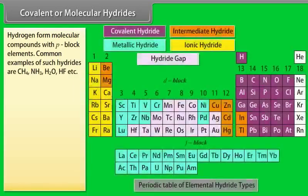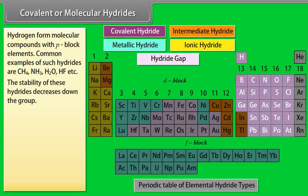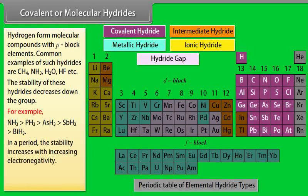Covalent or molecular hydrides. Hydrogen forms molecular compounds with P-block elements. Common examples of such hydrides are CH4, NH3, H2O, HF, etc. The stability of these hydrides decreases down the group. In a period, the stability increases with increasing electronegativity.